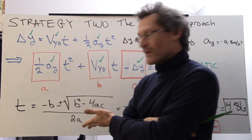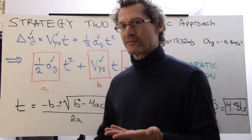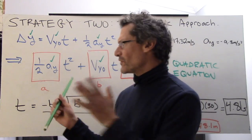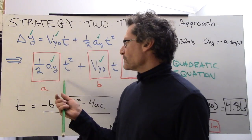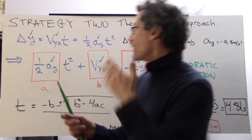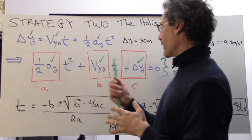The quadratic equation. Notice the format here. If I manipulate this and solve so that we have equal zero on the end, I've got a t squared term, a t term, and a constant term equals zero. Well, that is the form of a quadratic equation.